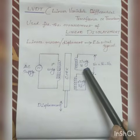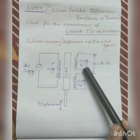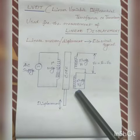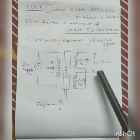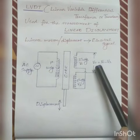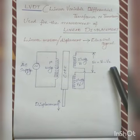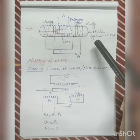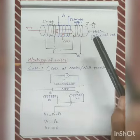Then only the net output voltage will be the difference in voltage between two secondary windings. If V1 is the voltage across secondary winding 1 and V2 is the voltage across secondary winding 2, then the net output voltage V0 is equal to V1 minus V2.